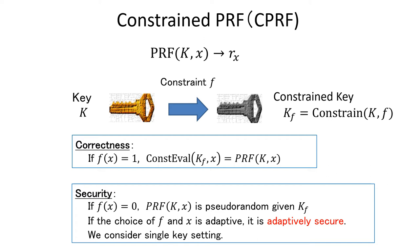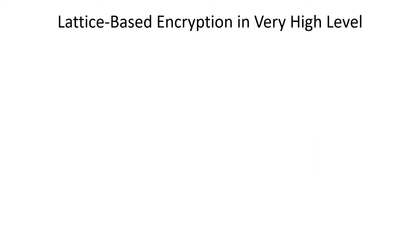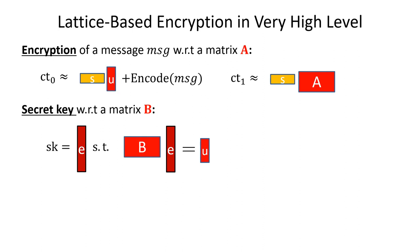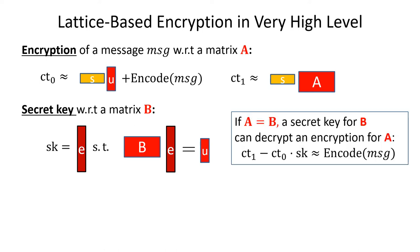Here, we explain the high-level idea of how lattice-based encryption works. Our public parameter includes a public matrix A and a vector U. Using the matrix A, we can encrypt a message. Here, S is a random vector and the approximation symbol represents that the values on the left-hand side and the right-hand side are equal up to some small error. Note that the message is encoded by some way. We can generate a secret key with respect to a matrix B. The secret key is a short vector E such that B·E equals to U. If the matrices match, namely in the case A equals to B, the secret key can be used to decrypt the ciphertext. To do so, we compute this and then remove the error and decode the message.